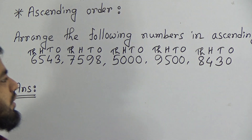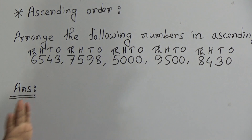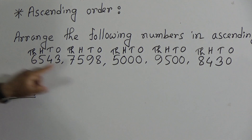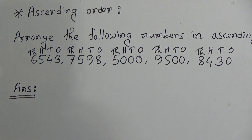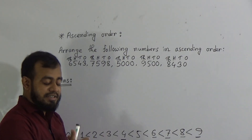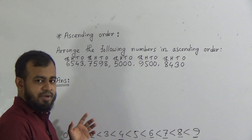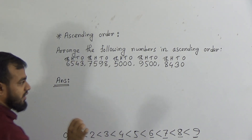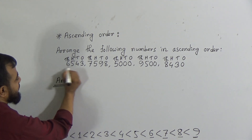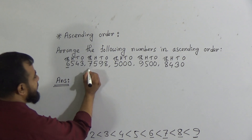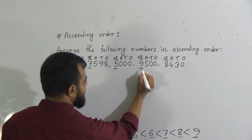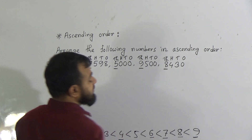Now, we have already seen that all the numbers have their highest position digit in the thousands place. That means the highest place value position is thousands in all the numbers. So we should look at only the thousands place, because when we arrange any number in ascending or descending order, we need to look at the highest place value's digit. The first number has 6 in the thousands place, the second number has 7, the third number has 5, the fourth number has 9, and the fifth number has 8 in the thousands place.